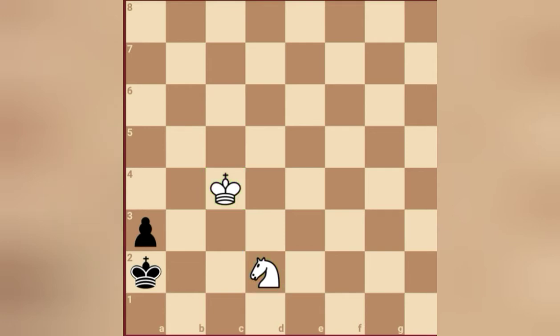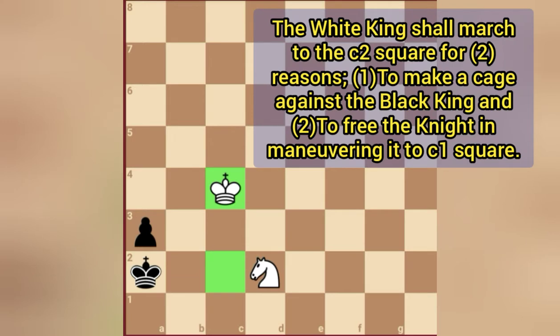The first thing to do is to put our king on c2 just to guard the escape squares of the black king. So here we go, we must play first king to c3 to cover the skipping square of black king.